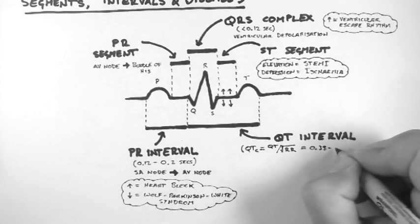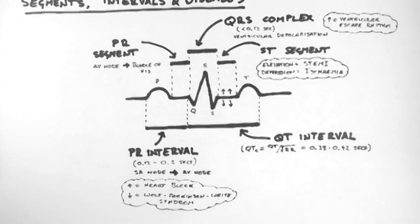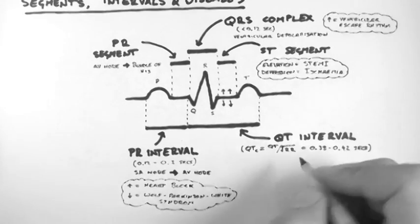The RR interval is not labelled here, but it is the duration between one R wave and the following R wave. A normal QTC should be calculated at between 0.38 and 0.42 seconds.